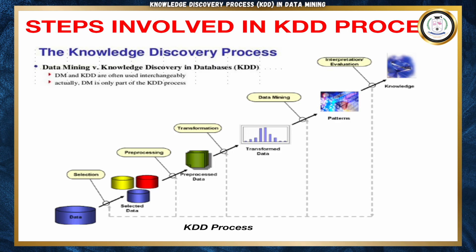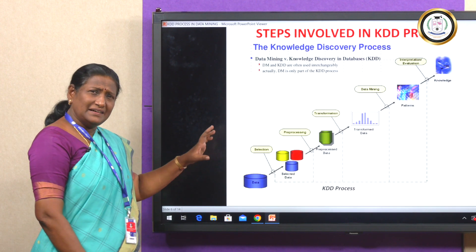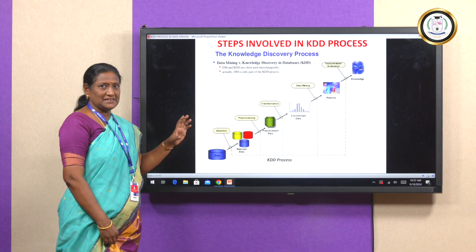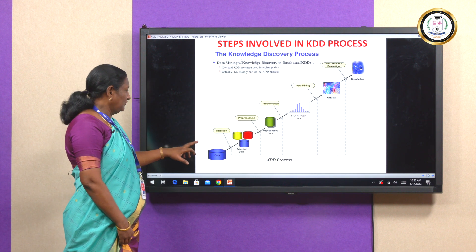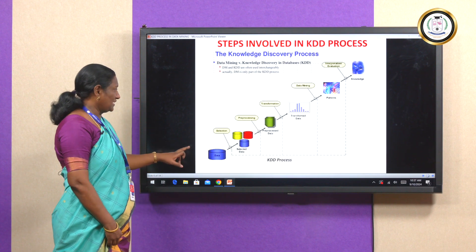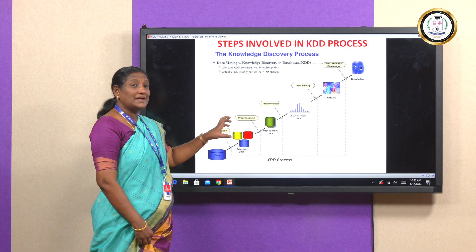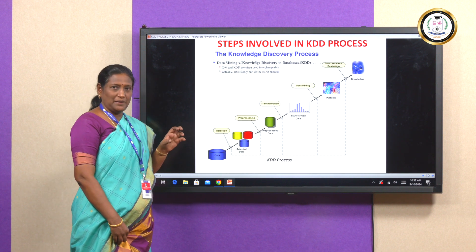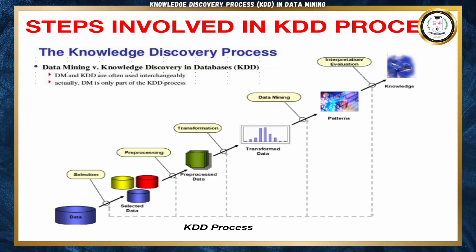This diagram briefly explains the KDD process. At the beginning, at the lowermost part, we have the data — data selected from different heterogeneous databases of different types collected from different sources, stored in a data warehouse. From this data warehouse, data selection is performed. The selected data then undergoes data pre-processing, during which noisiness and other erroneous data are removed, resulting in cleaned data.